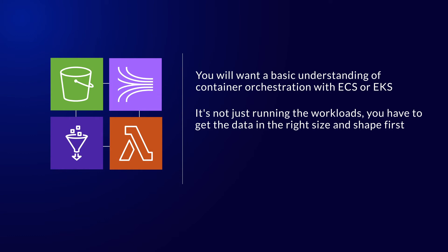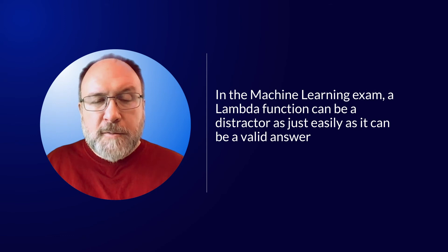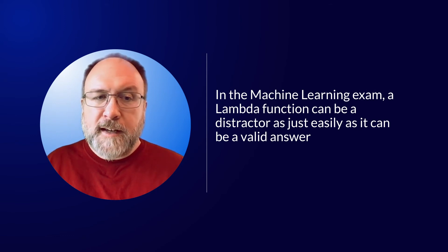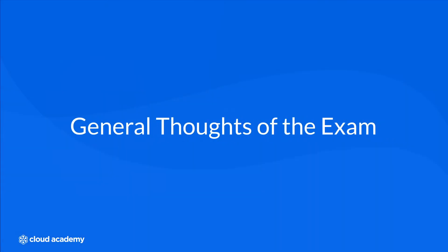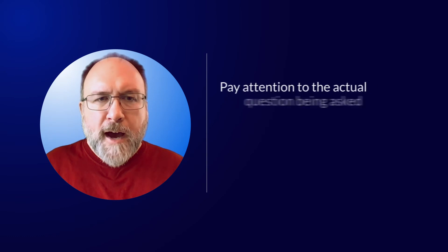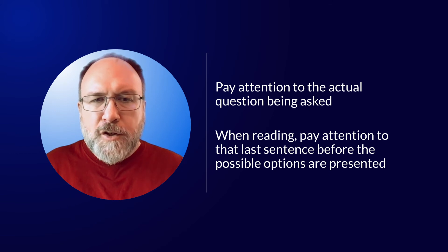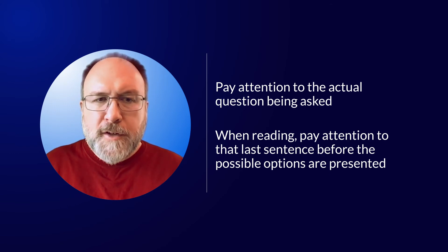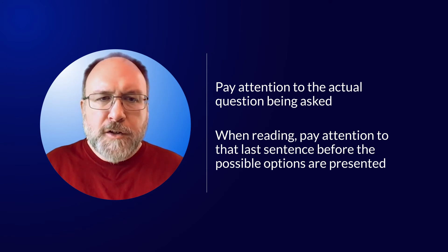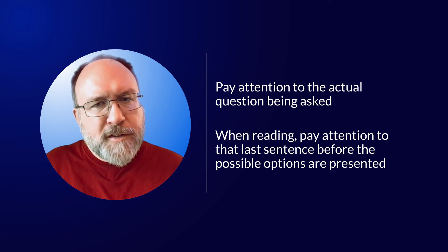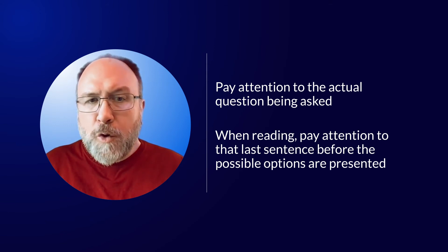One last thing about AWS-only questions: AWS Lambda is important, but when it comes to machine learning, there's a time and place when Lambda functions are the best tool for the job — and sometimes they're not appropriate at all. In the machine learning exam, a Lambda function can be a distractor just as easily as it can be a valid answer. You have to pay attention to the actual question being asked. It's easy to start reading a question and make assumptions. Pay attention to that last sentence before the possible options are presented — are you being asked what approach is the simplest, takes the least amount of effort, has a high level of accuracy, or will improve performance?